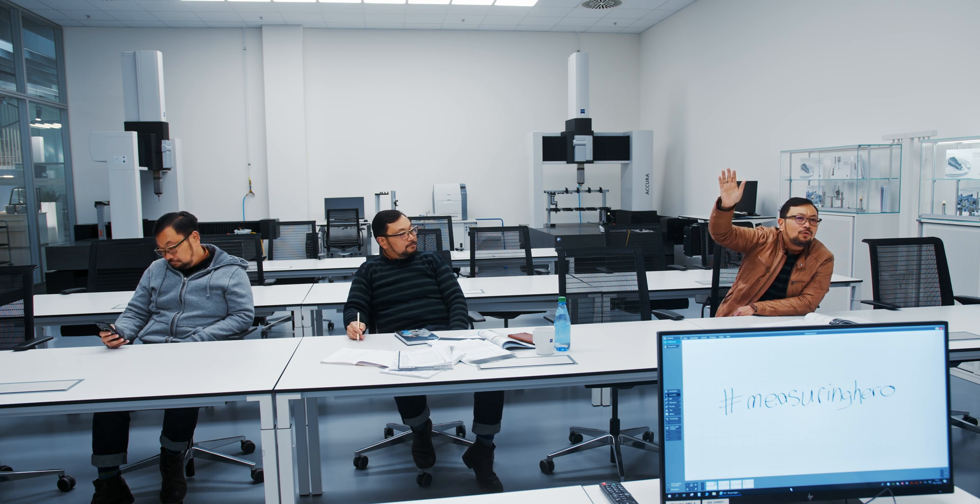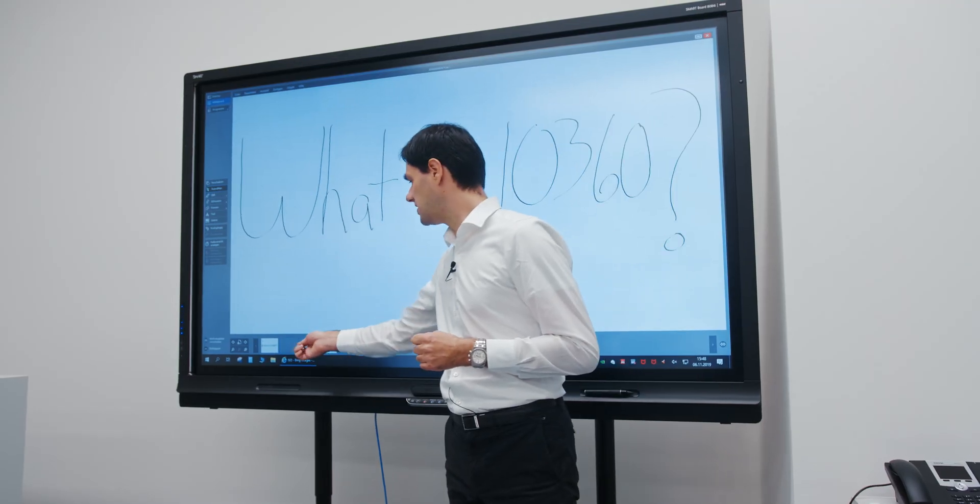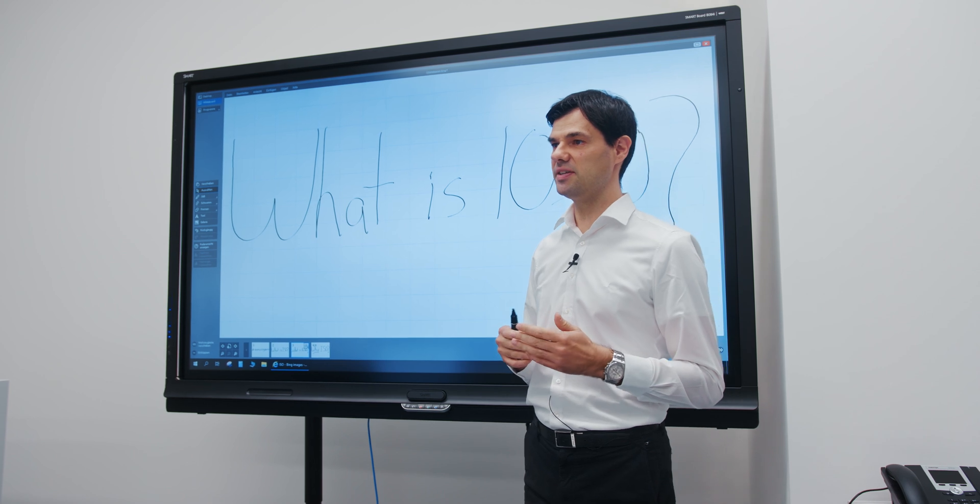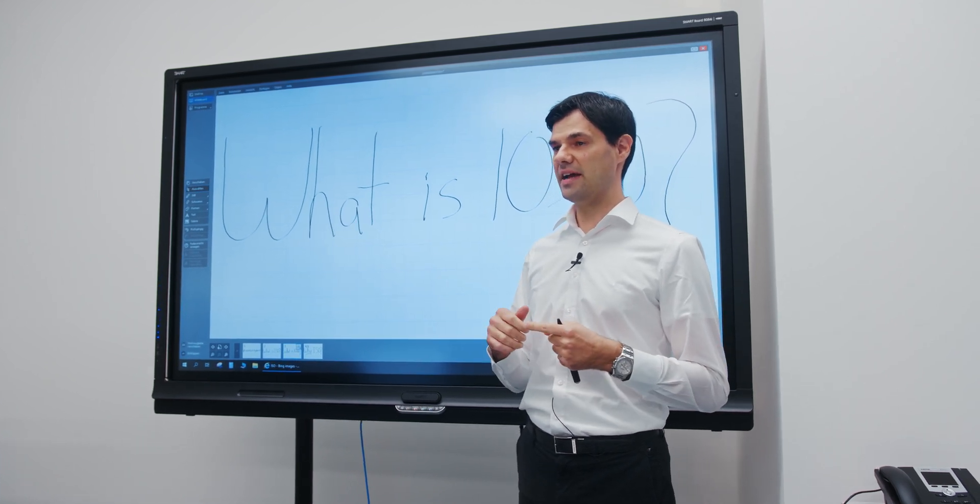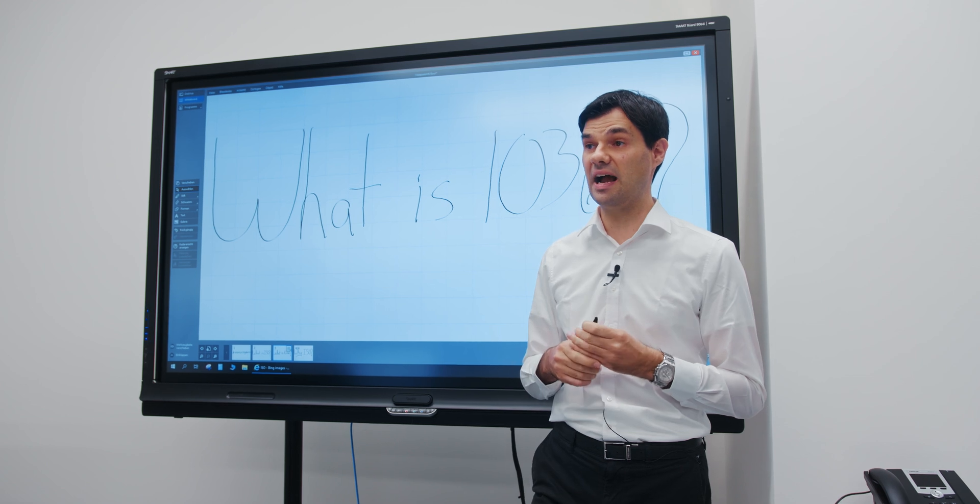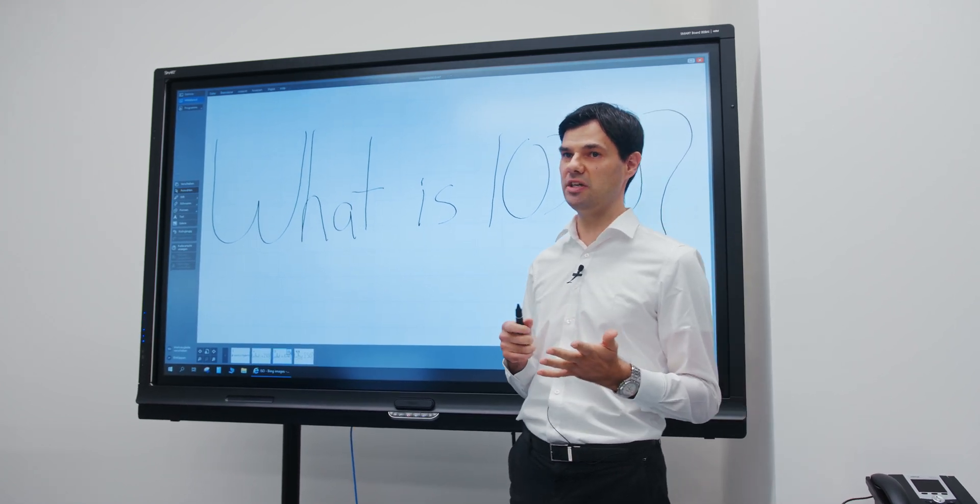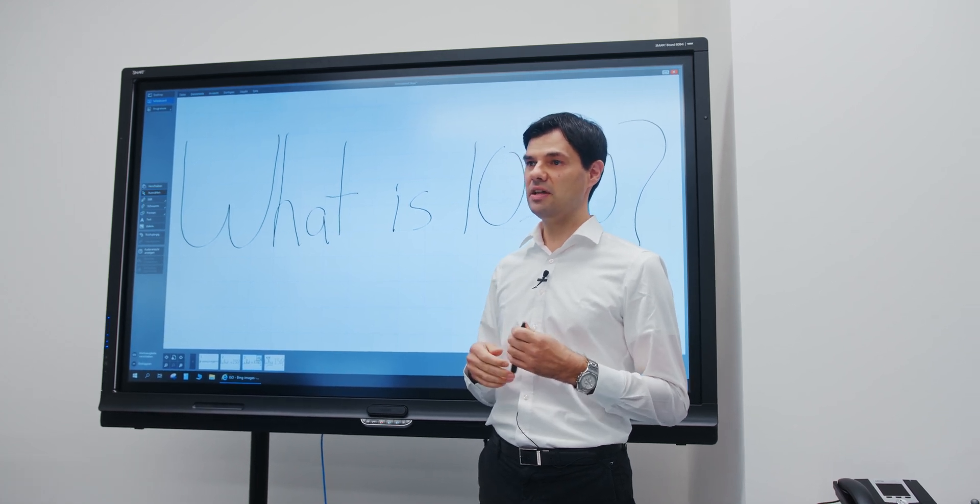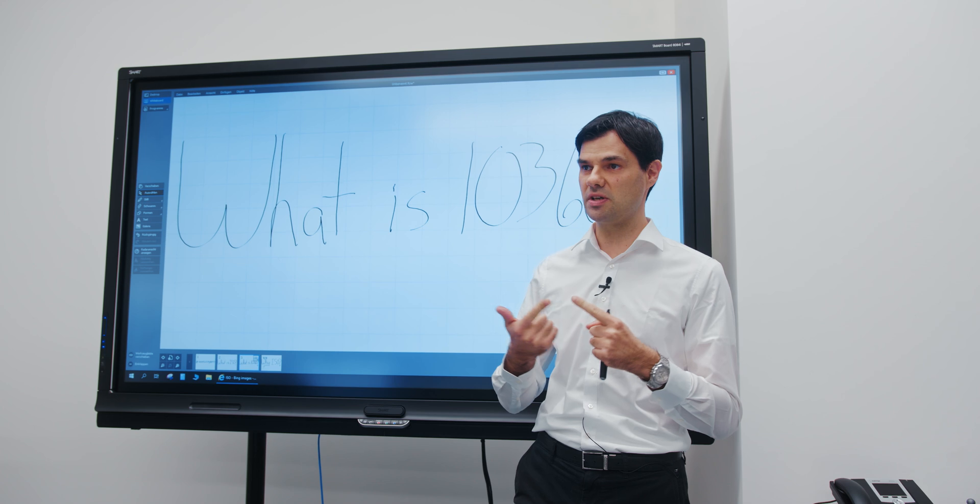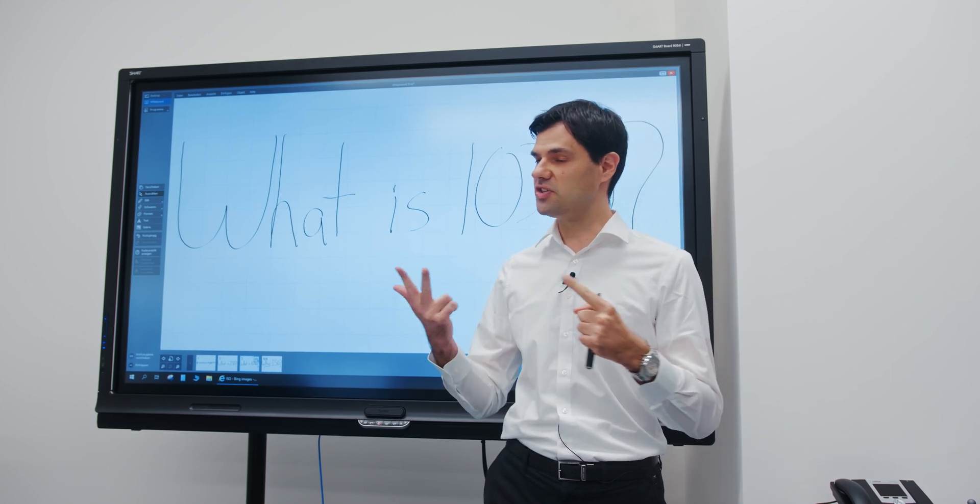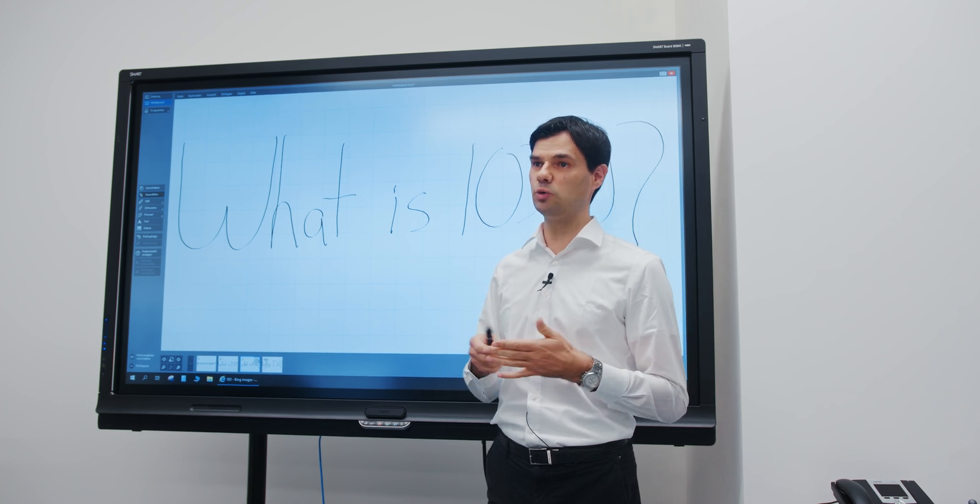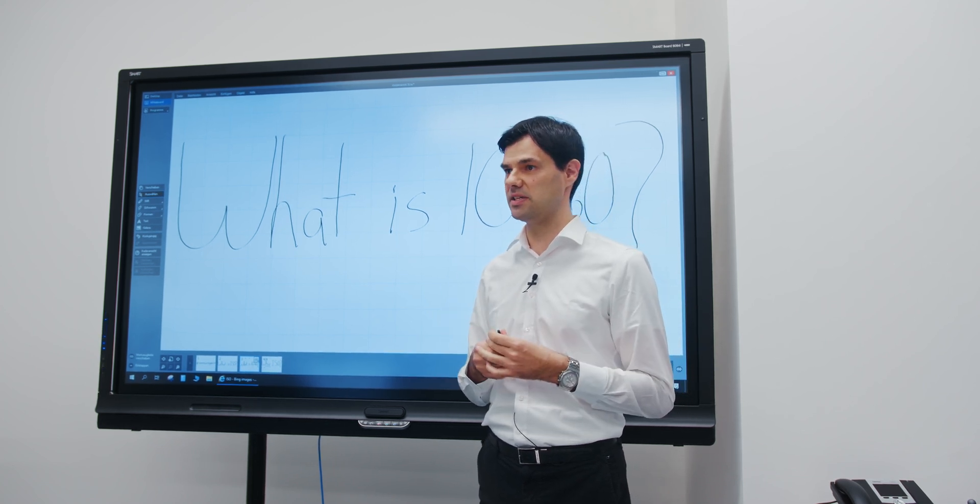I have a question. What is ISO 10 360? The ISO 10 360 is a series of standards where we develop tests for reverification and acceptance of coordinate measuring machines. It's divided into different parts. They deal with tactile systems, optical systems, CT, laser trackers and so on, defining the tests and how to accept these systems.